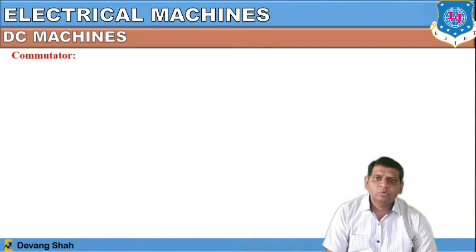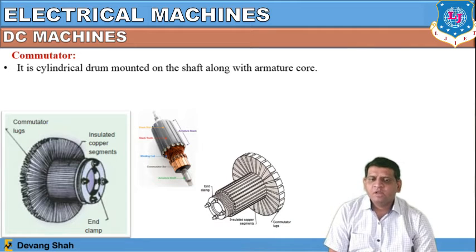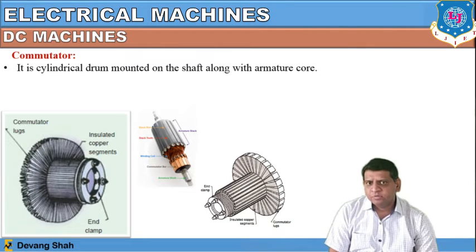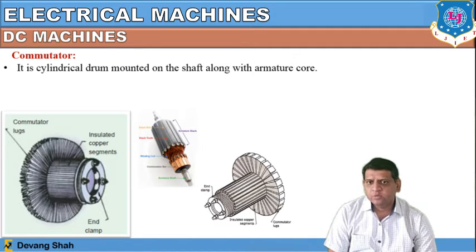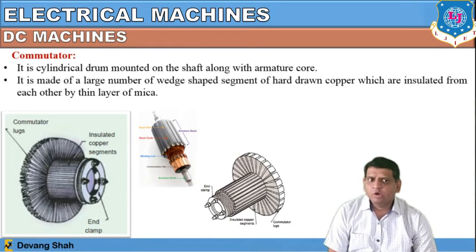Let us now discuss the commutator. It is a cylindrical drum mounted on a shaft along with the armature coil. If you enlarge this portion, you can see the commutator lugs and the insulated copper segments. It is made of a large number of wedge-shaped segments of hard-drawn copper, which are insulated from each other by a thin layer of mica. The armature winding is connected to various segments.